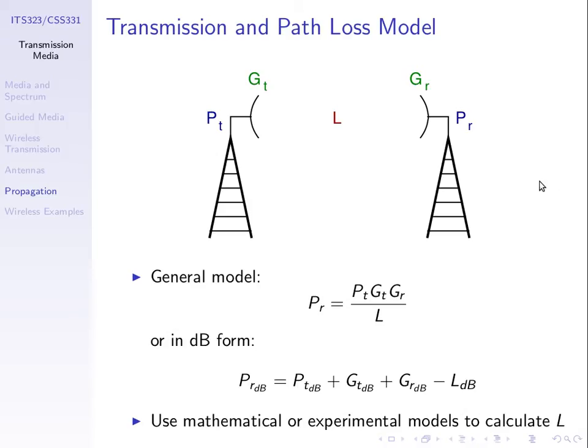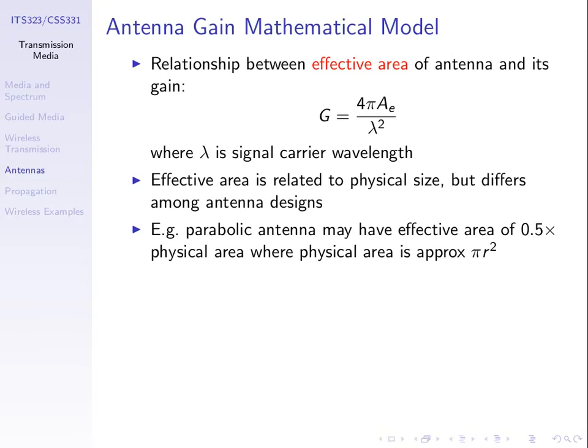We also have an equation that allows us to calculate antenna gain. If we know the effective area of the antenna and the wavelength of the signal being transmitted, we can calculate the gain of that antenna. The effective area is related to the physical area, and we'll see a couple more examples of that today. Let's summarize the remaining slides and go through one more example relating antenna gain and path loss together.